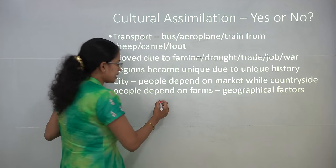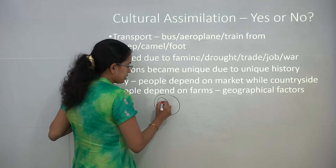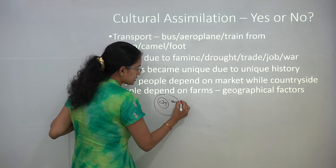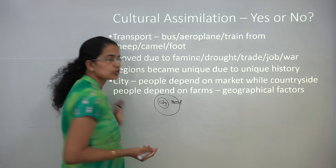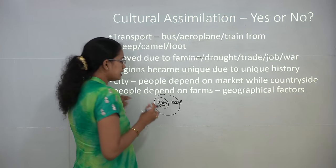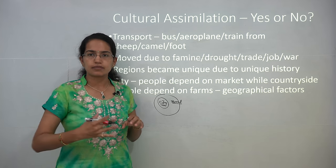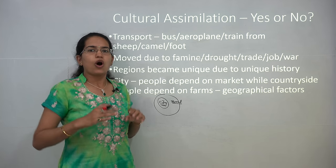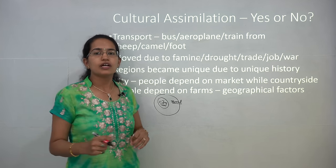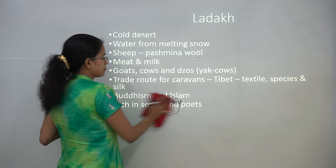Now consider a city and a countryside. You have a city and a rural area, which we also call the countryside. The city depends on the market for vegetables and fruits, whereas in the countryside you have farm production that takes place within the village itself.